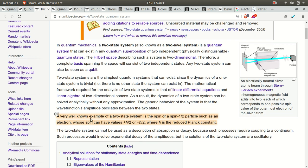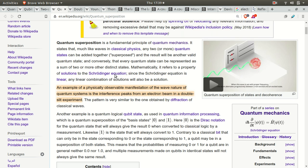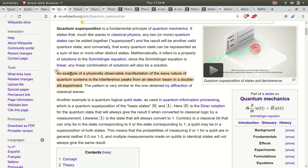A very well-known example of a two-state system is the spin of a particle such as an electron. That's our plan here. We're going to use electrons as our physical manifestation of this quantum theory idea. Quantum superposition. An example of a physically observable manifestation of the wave nature of quantum systems is the interference peaks from an electron beam in a double-slit experiment. So what we're going to try and do is we're going to try and show that an electron is both a wave and a particle at the same time.